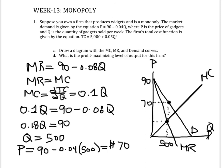So if this company was controlled by a monopolist, the monopolist will produce 500 units of output and it will price at a price of $70.